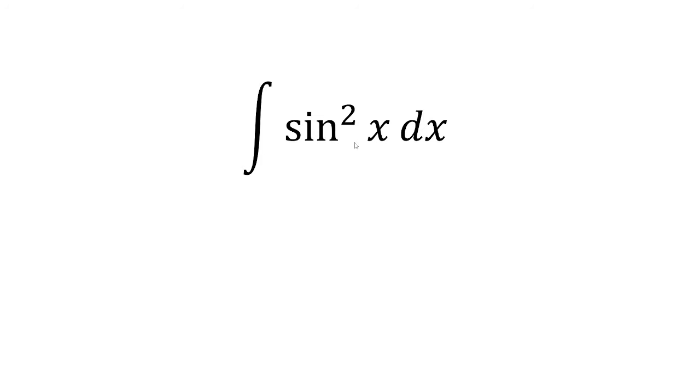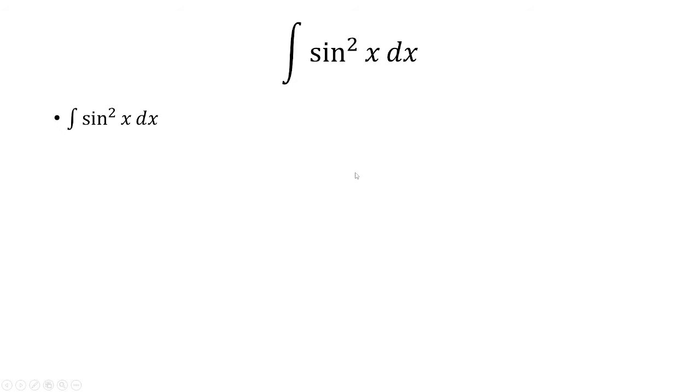In this video, we want to integrate sine squared x dx. Now the way we're going to do this is by making a substitution. So sine squared can be rewritten as 1 minus cosine of 2x over 2.